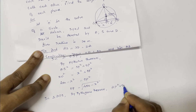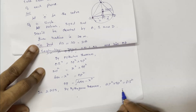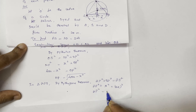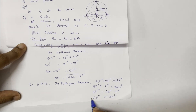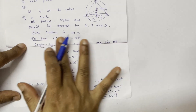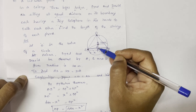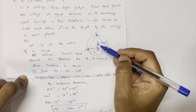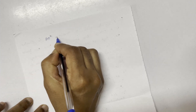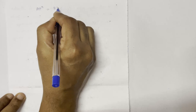OP squared plus SP squared equals AS squared. AS equals 2x, so the whole squared gives SP squared equal to x squared. AP squared equals 4x squared minus x squared. That is, AP squared equals 3x squared. Taking the square root, AP equals root 3 times x.